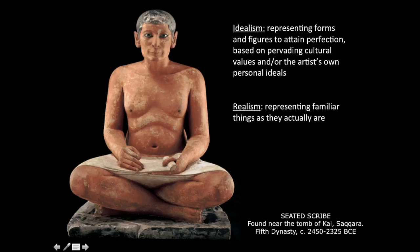The idealism that characterizes the portraiture of Egyptian god-kings did not extend to the portrayal of non-elite individuals. Idealism means representing forms and figures to attain perfection based on pervading cultural values — so even if Khafra was maybe 50 or 60 when that statue was carved, he still would have been carved like a young god-king warrior. Realism, on the other hand, means representing familiar things as they actually are.